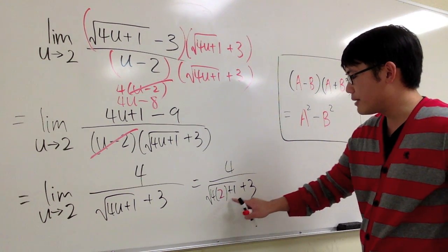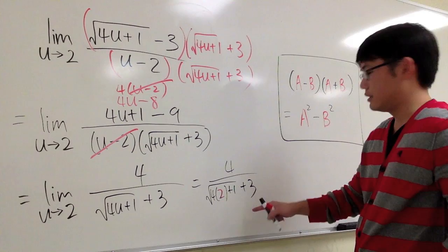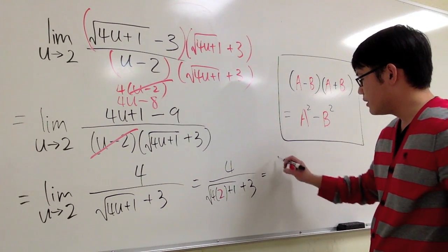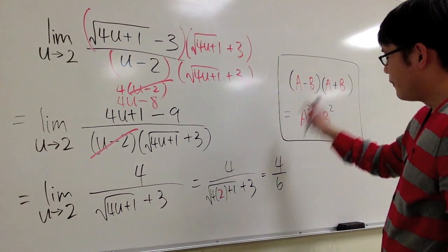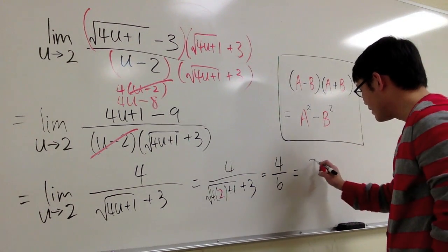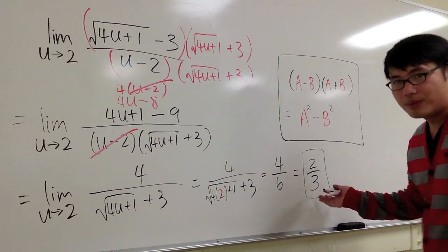4 times 2 is 8, 8 plus 1 is 9, square root of 9 is 3, plus 3 is 6. This is going to be 4 over 6. Of course, we can reduce the fraction. 4 over 6 is 2 thirds, and that will be the answer.